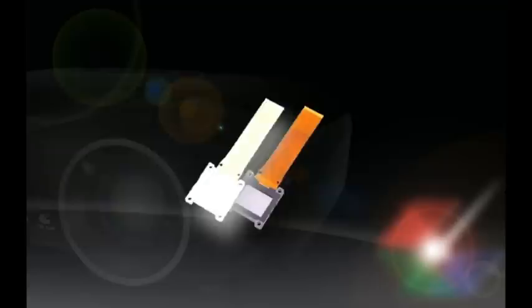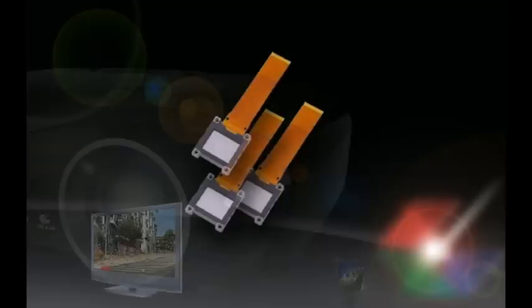3LCD is built around three discrete LCD chips. These tiny liquid crystal displays are similar to the LCDs found in televisions, monitors, notebook computers, even telephones.